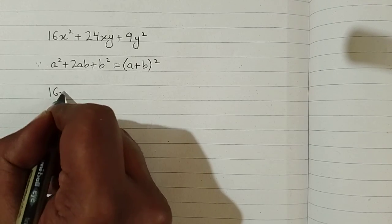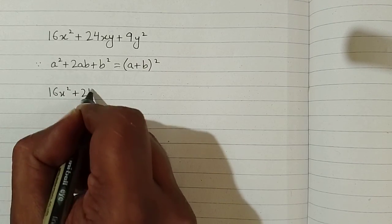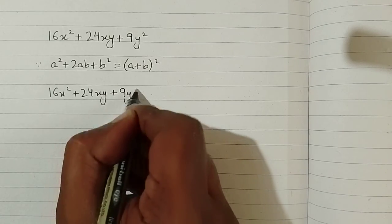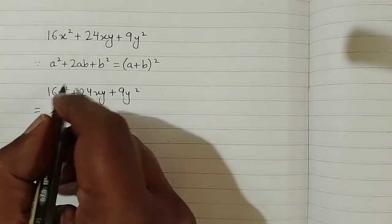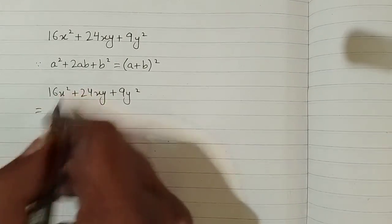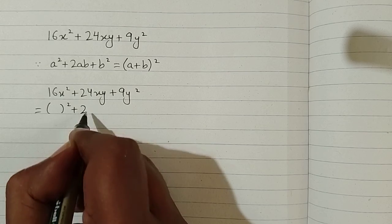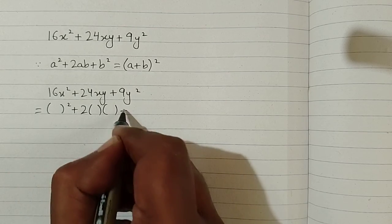So we have 16x² + 24xy + 9y². First we will write the structure of the formula. We put brackets in place of a and b in this formula, so we have a² + 2ab + b².